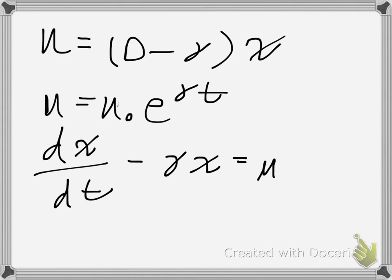So now it looks like dx dt minus gamma x equals u. Ah, I keep writing mu's. u naught e to the gamma t.